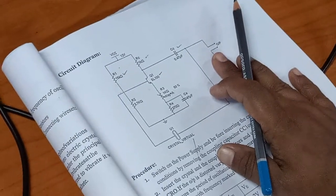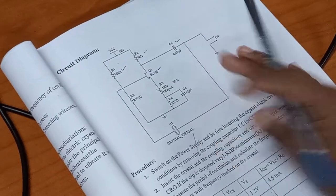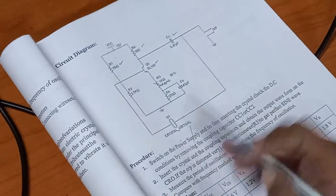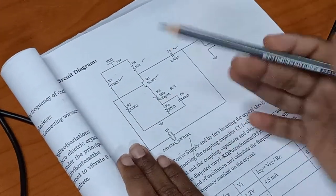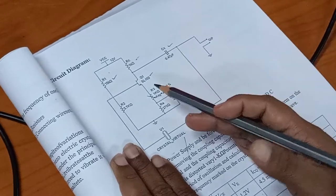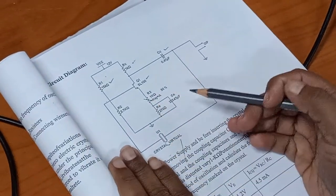This experiment will generate a crystal oscillator using a 2 megahertz crystal. This circuit is a voltage divider circuit, also known as a common emitter RC coupled amplifier for amplification.